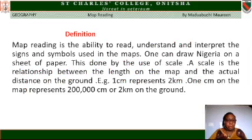Definition of Map Reading: Map reading is the ability to read, understand, and interpret the signs and symbols used in maps. One can draw Nigeria on a sheet of paper, and this is done by the use of scale.